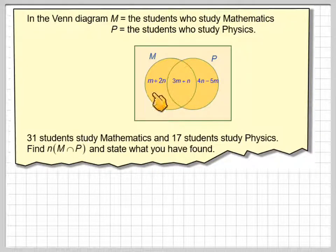So basically, first of all, we've got to find the values of M and N. Now, in order to do this, because we've got two unknowns here, we need to use simultaneous equations.